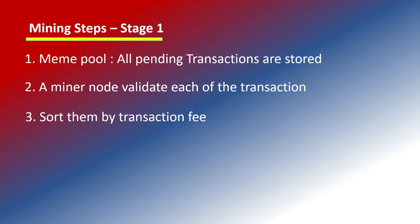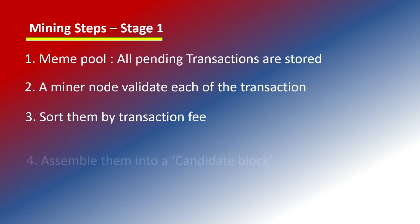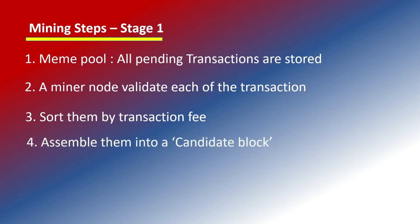If any transaction is pending validation in the Bitcoin network, it may take 3 to 4 hours. This is because transactions are validated based on fees. Transactions paying higher fees are validated first, then the remaining transactions are validated and arranged in a particular order.